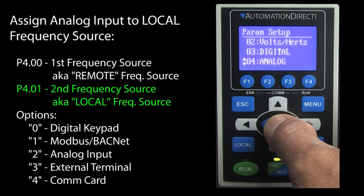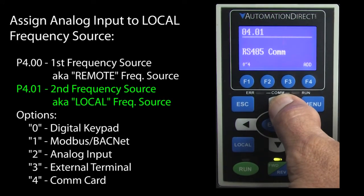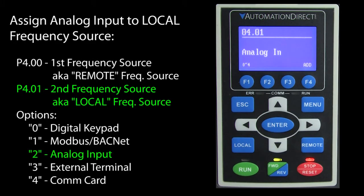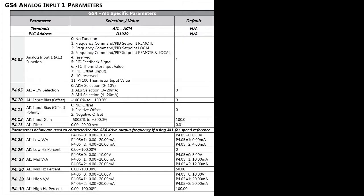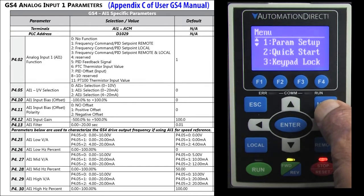We'll use parameter 401 to set the local frequency source to use the analog input as its reference. That will leave the remote frequency source available for something like a PLC to control the drive. Let's use that handy analog input reference chart in Appendix C as a checklist to make sure we don't miss anything.